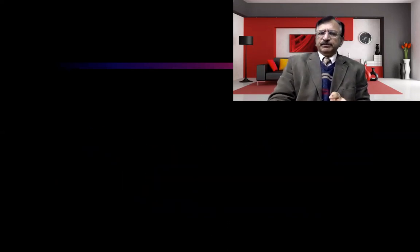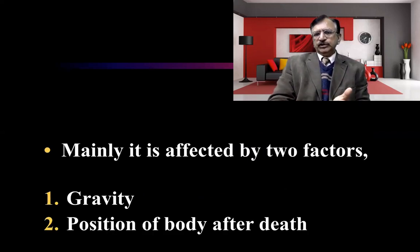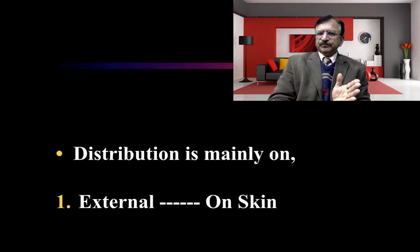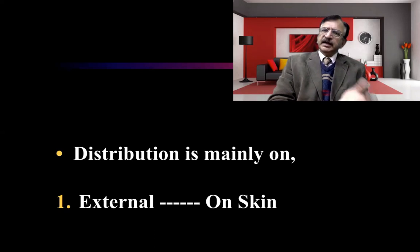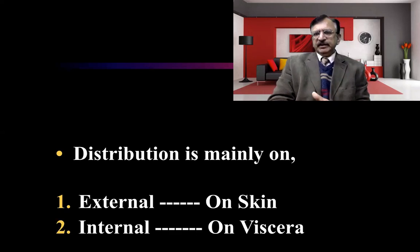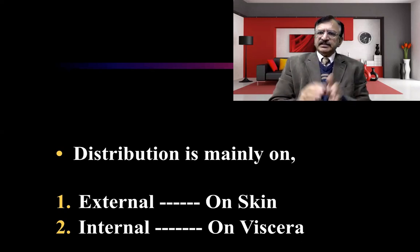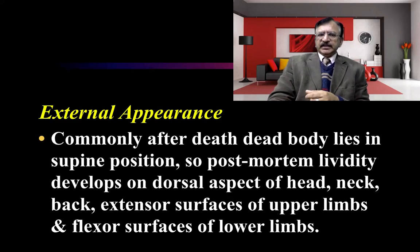The distribution of hypostasis is mainly affected by two factors: gravity, and the position of the body after death. The areas of distribution are externally on the skin of the dependent parts, and internally on the visceral surfaces which are in the dependent position. Externally, after death the dead body commonly lies in the supine position with the face facing upward.